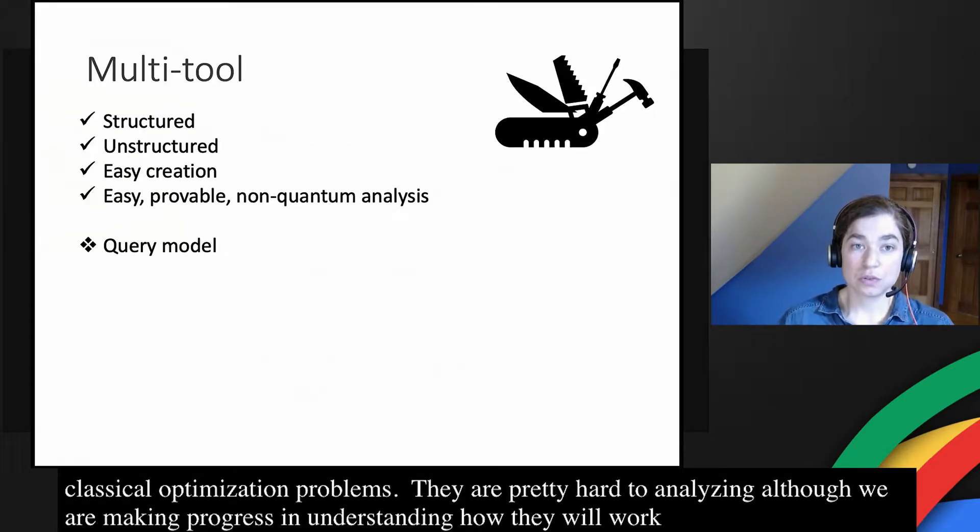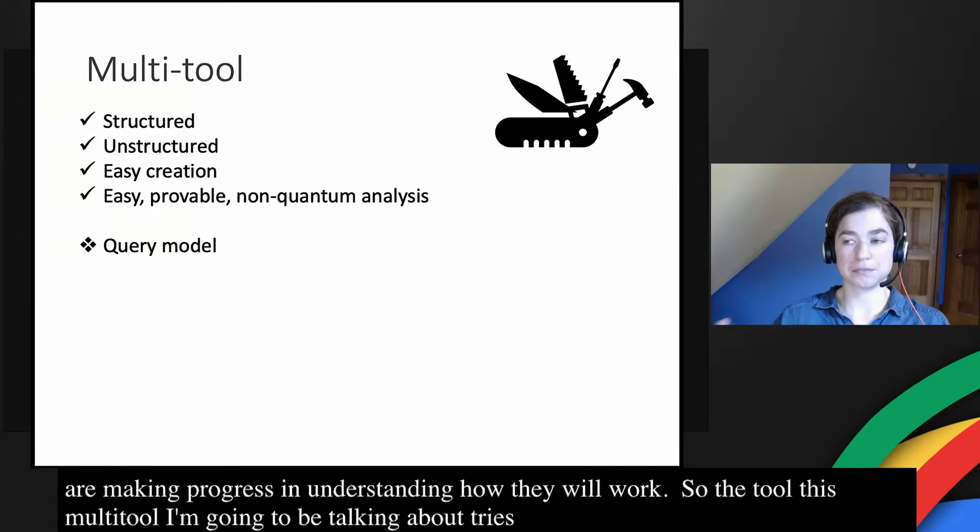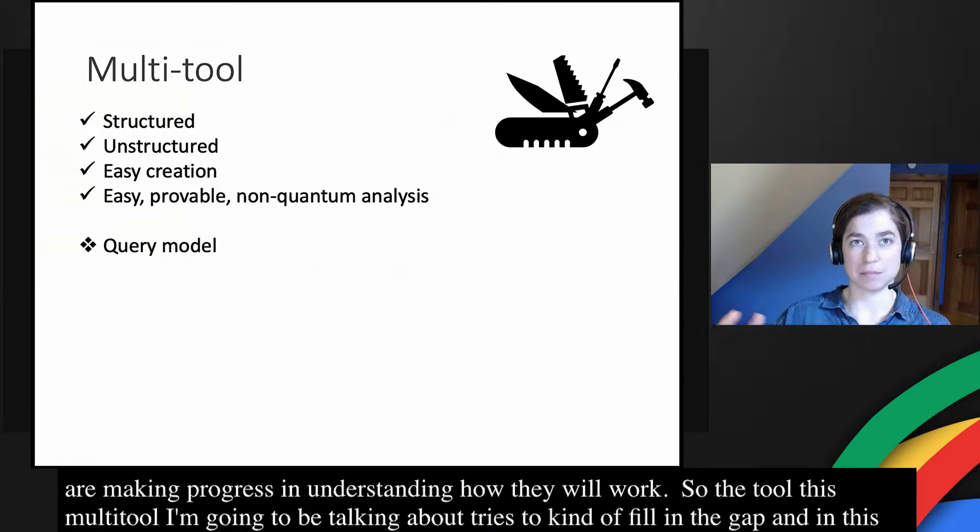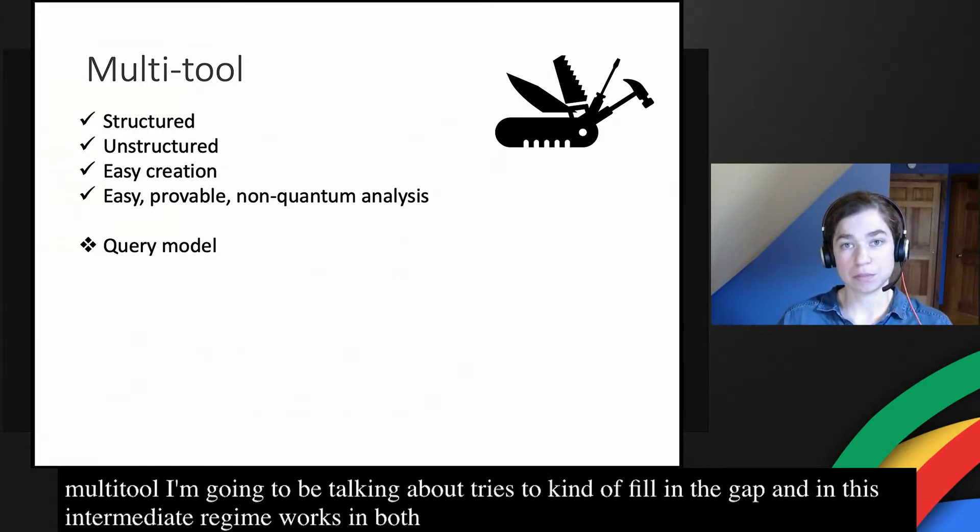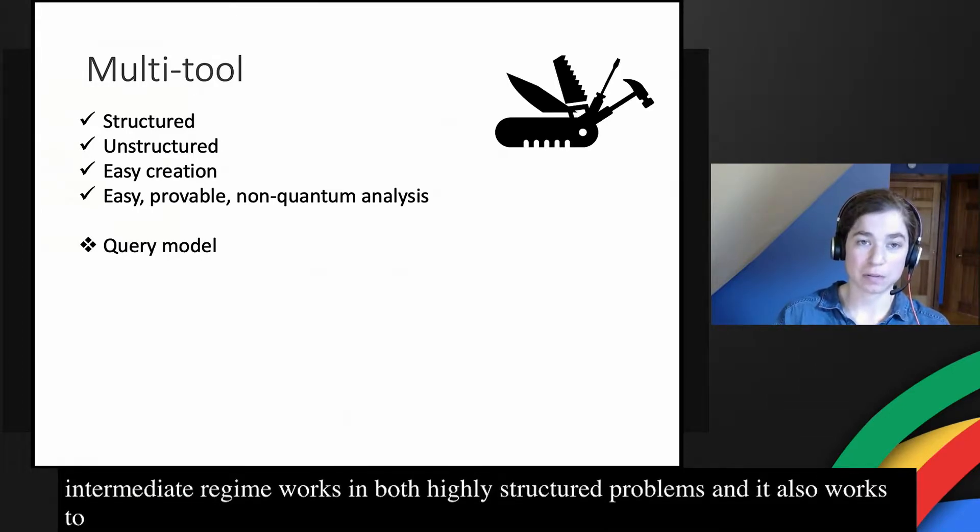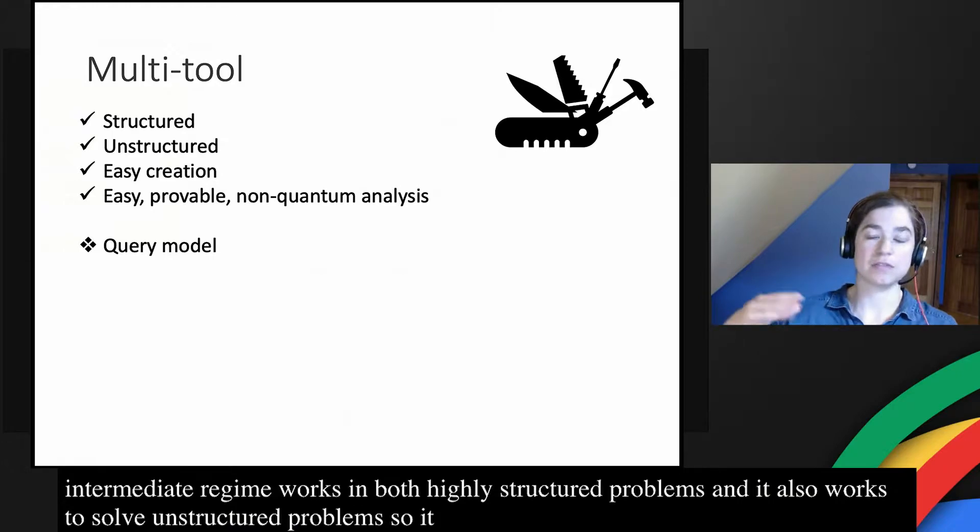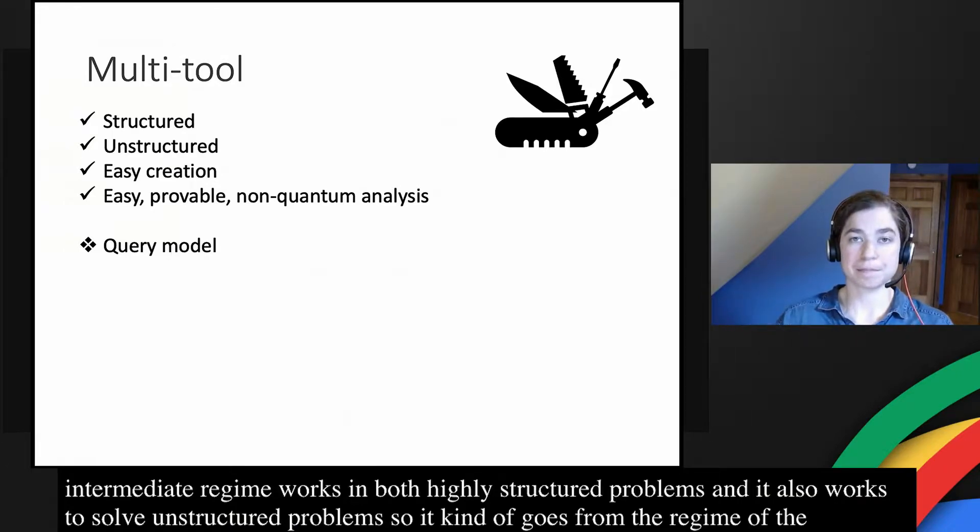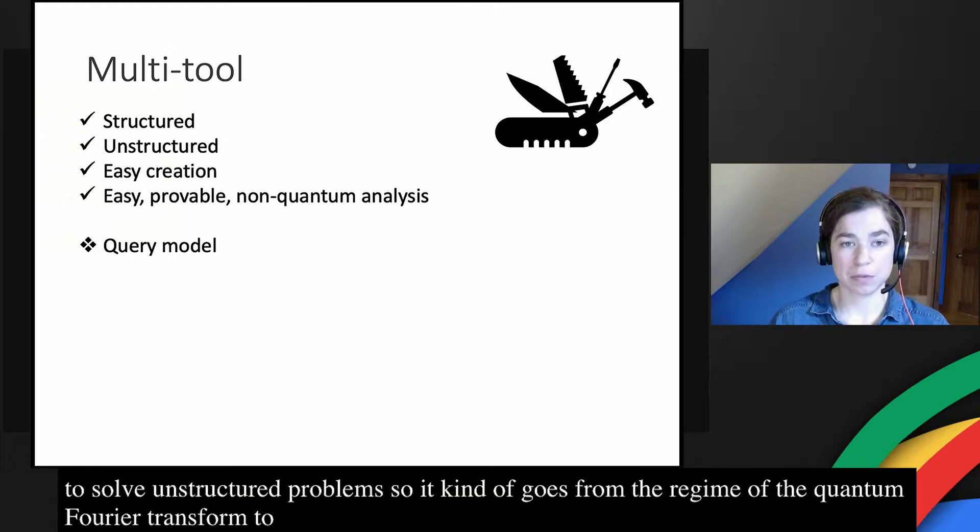The multi-tool that I'm going to be talking about today tries to fill in the gap in this intermediate regime. It works in both highly structured problems and also works to solve unstructured problems. So it goes from the regime of a quantum Fourier transform to like a Grover search type problem.